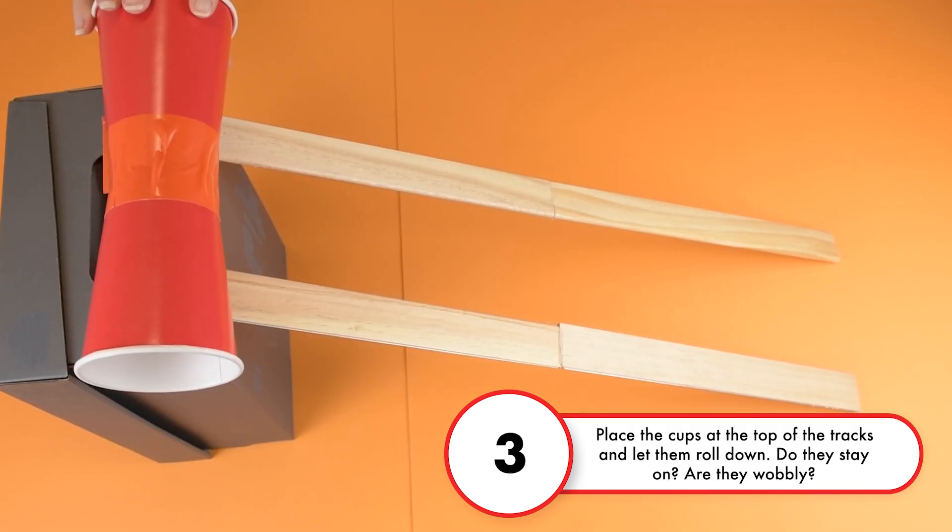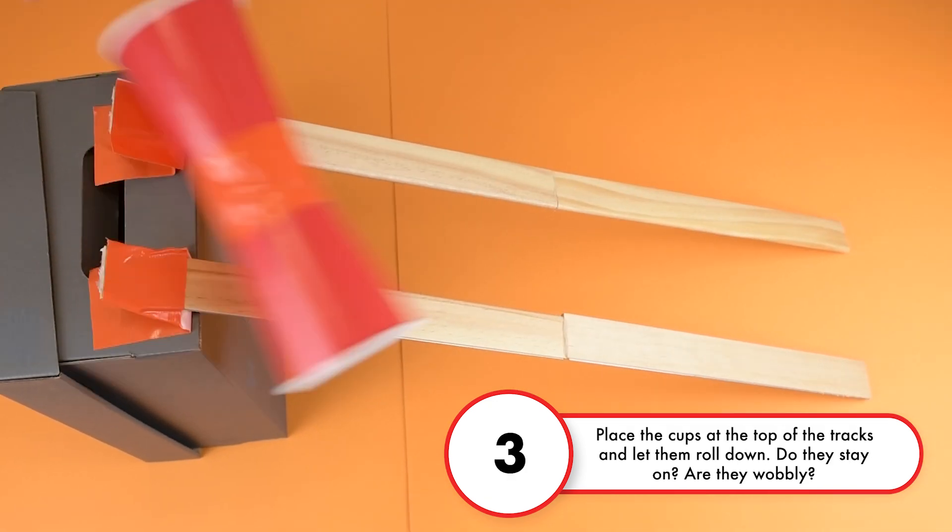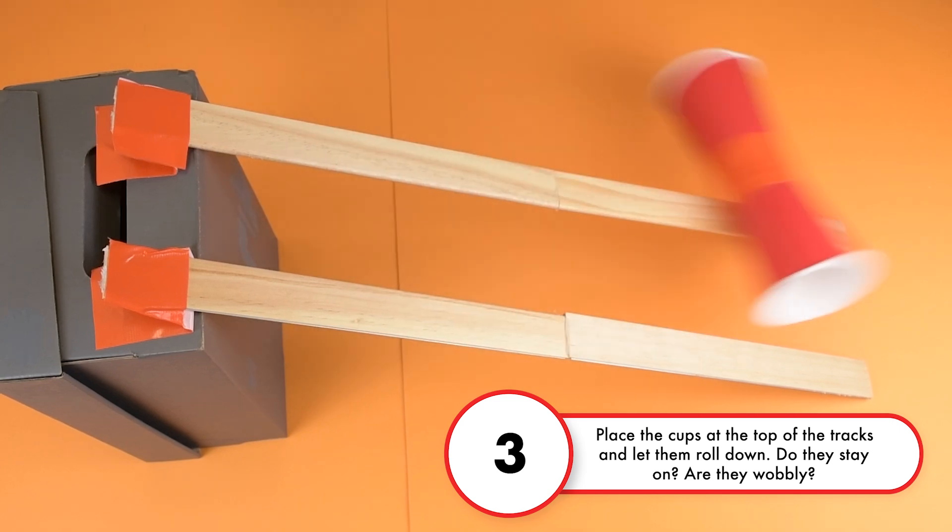Step 3. Place the cups at the top of the tracks and let them roll down. Do they stay on? Are they wobbly?